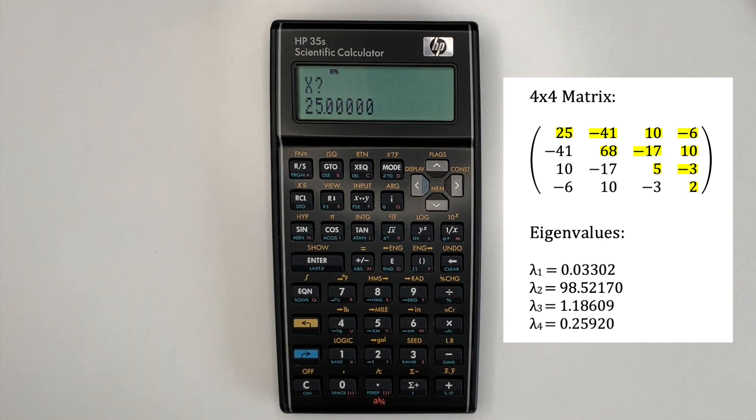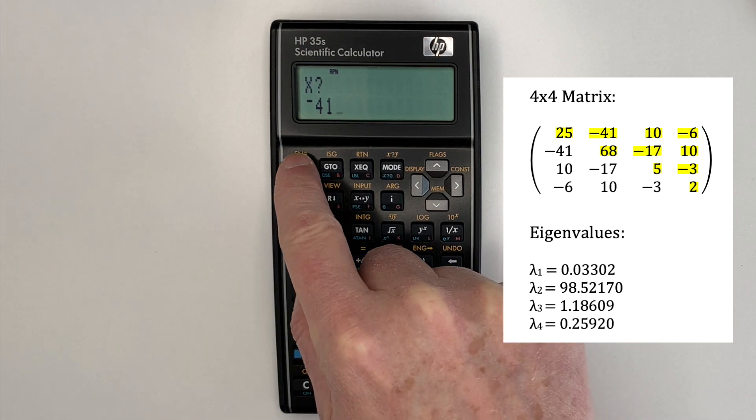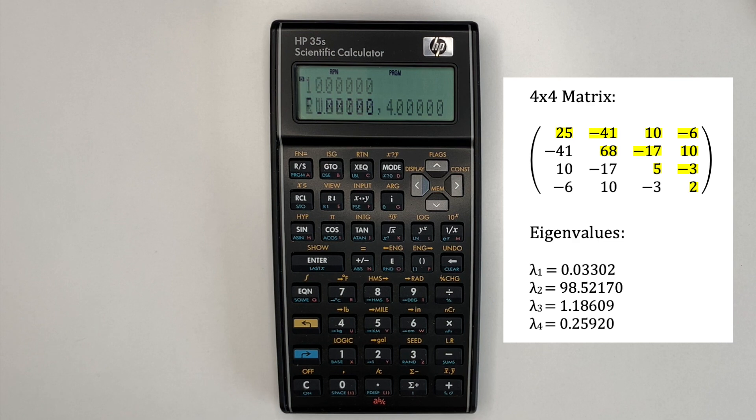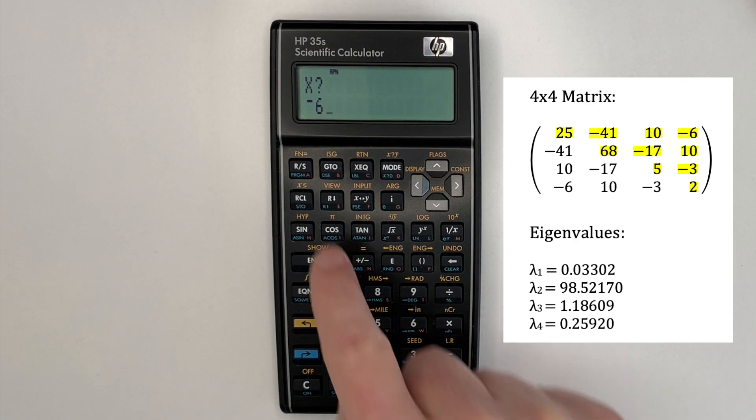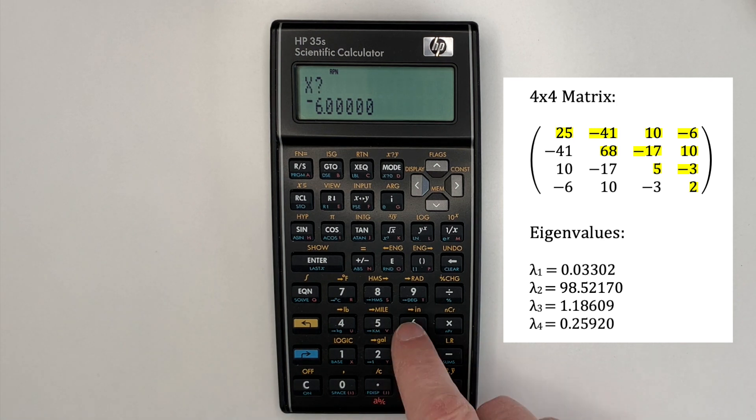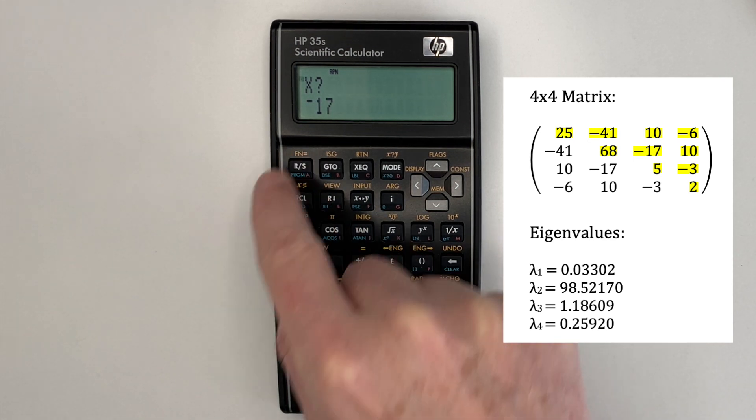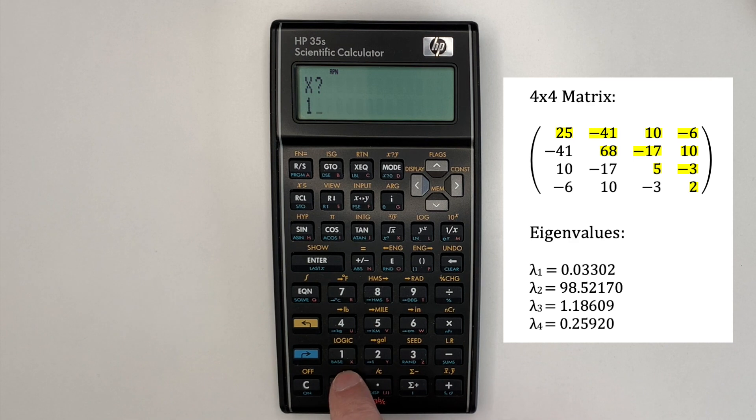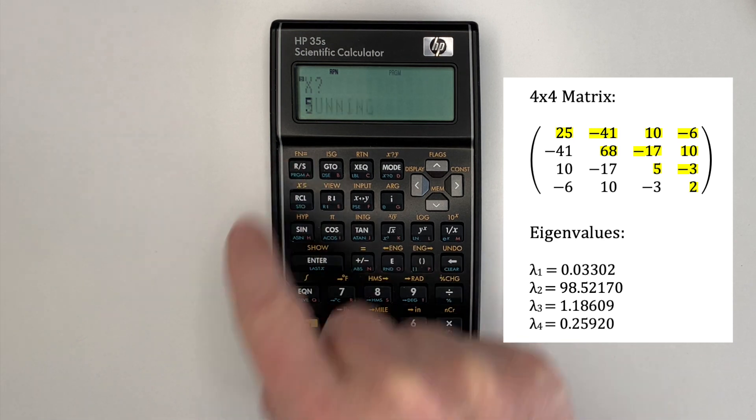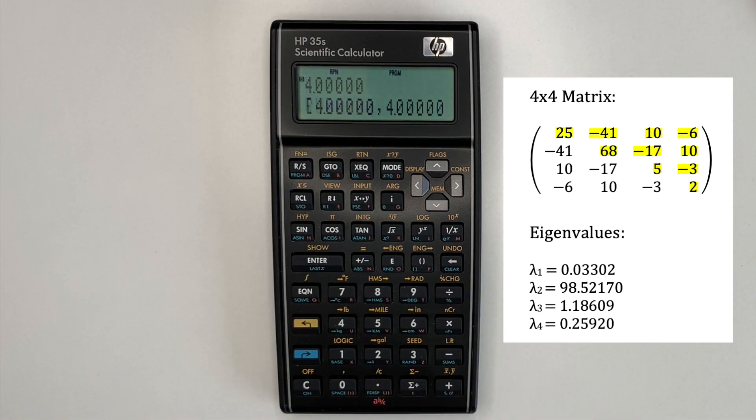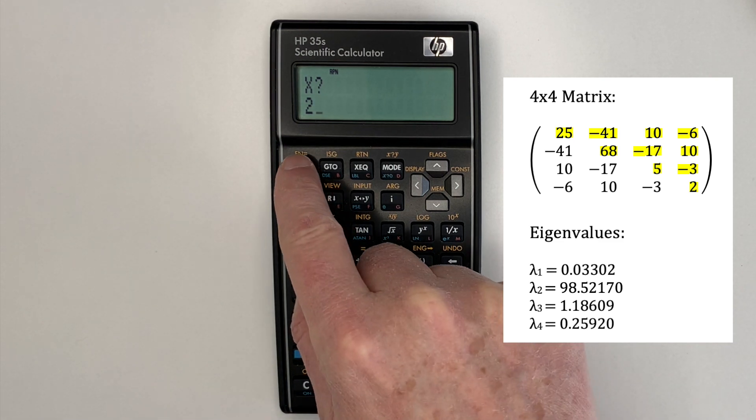25, negative 41, 10, negative 6, 68, 17, 10, 5, negative 3. And once we enter the final element, 2, it'll calculate the eigenvalues.